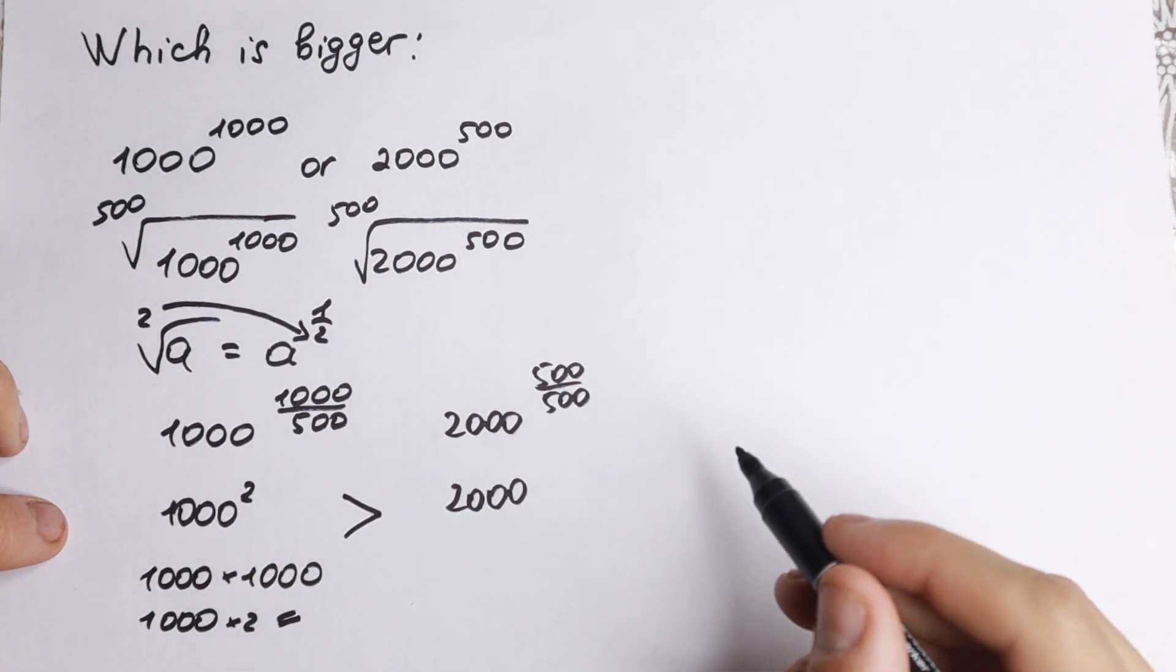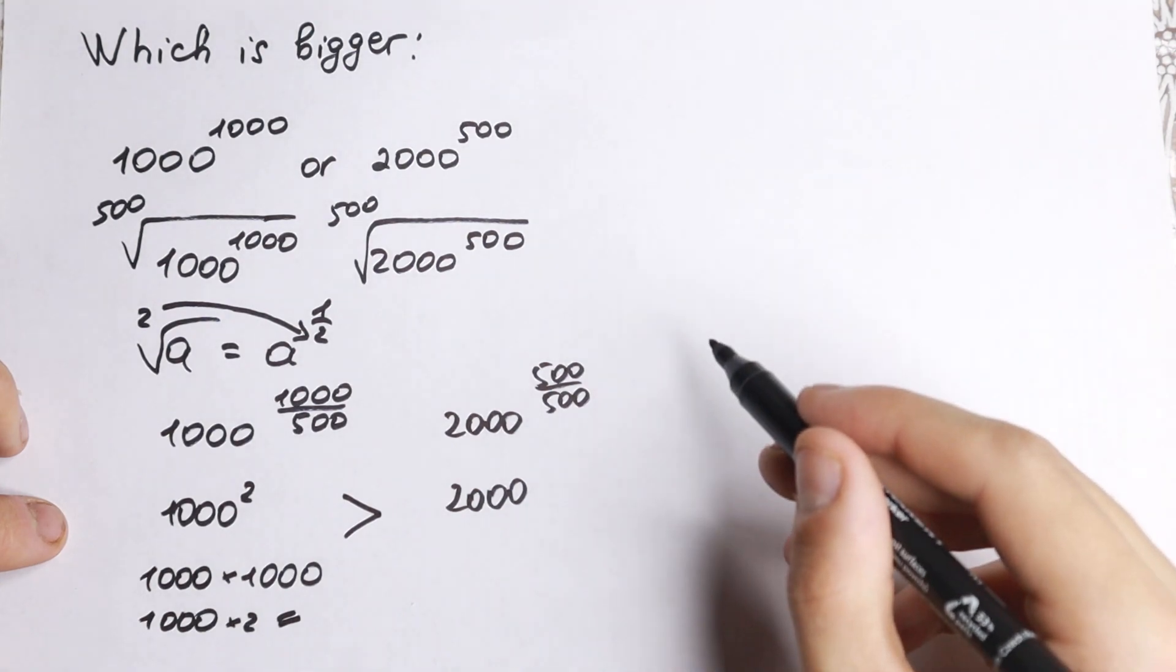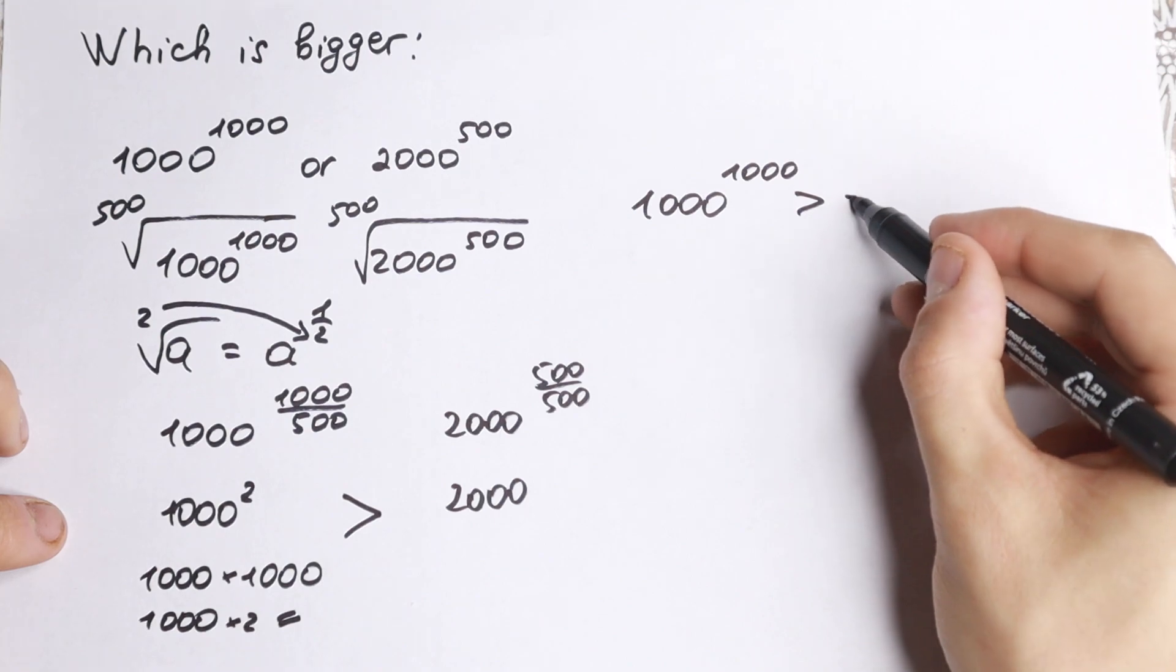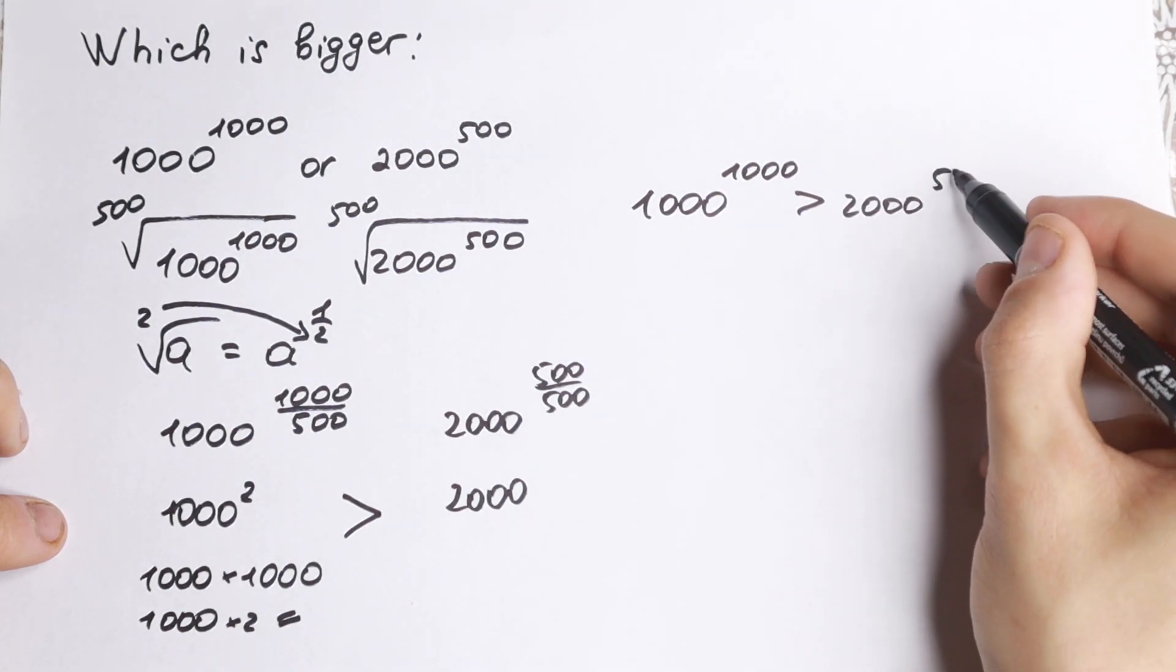So as a result, we can easily say that this on the left will be greater. So 1000 to the power 1000 is greater than 2000 to the power 500.